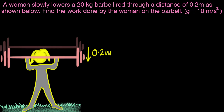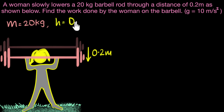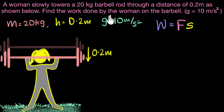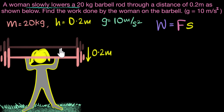Let's write down what's given. The mass of the barbell rod is 20 kilograms, the height through which it moves is 0.2 meters, and g is taken as 10 meters per second squared. Since we need work done, it's force times displacement. The displacement is 0.2 meters. The force here is what the woman applies on the barbell. The clue is that she is slowly lowering it — imagine with no acceleration. Can you figure out what that force is and its direction?